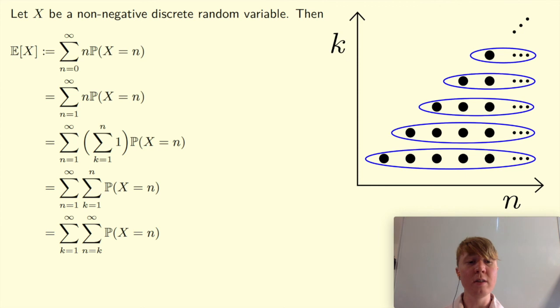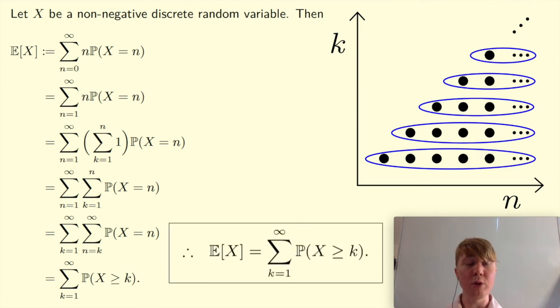We can rewrite this sum, sum from n equals k to infinity, the probability X equals n, simply as the probability that X is greater than or equal to k. And then this is what we were trying to prove, that the expectation of X is equal to this sum from k equals 1 to infinity, the probability X is greater than or equal to k.